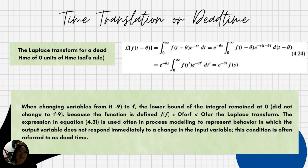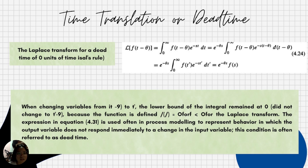The time translation or dead time Laplace transform applies Saal's rule for a dead time of zero units. When changing variables, the lower bound of the integral remains at zero and does not change to t minus theta. The expression in equation 4.31 is used in process modeling to represent behavior in which the output variable does not respond immediately to a change in the input variable — a condition called dead time.